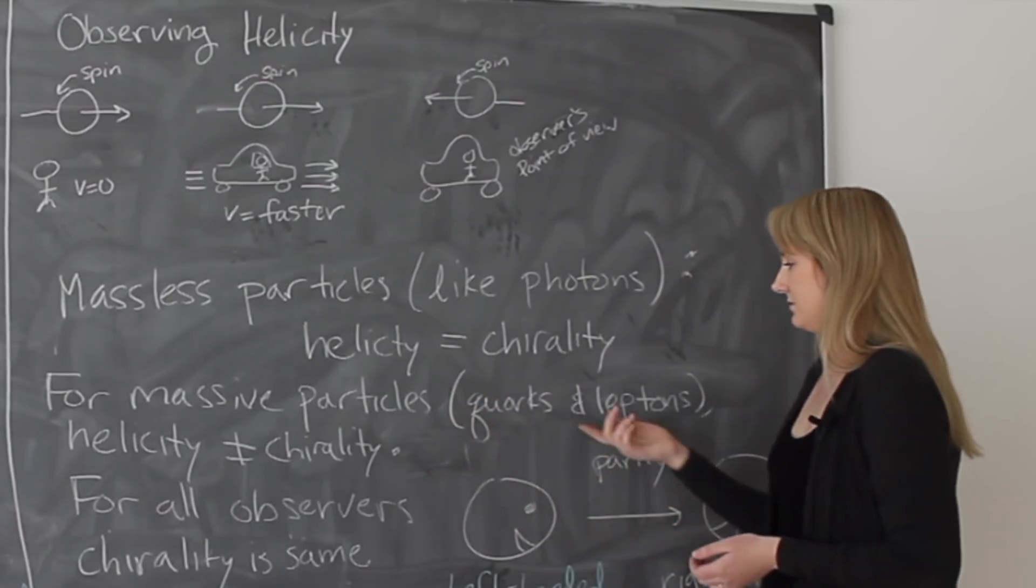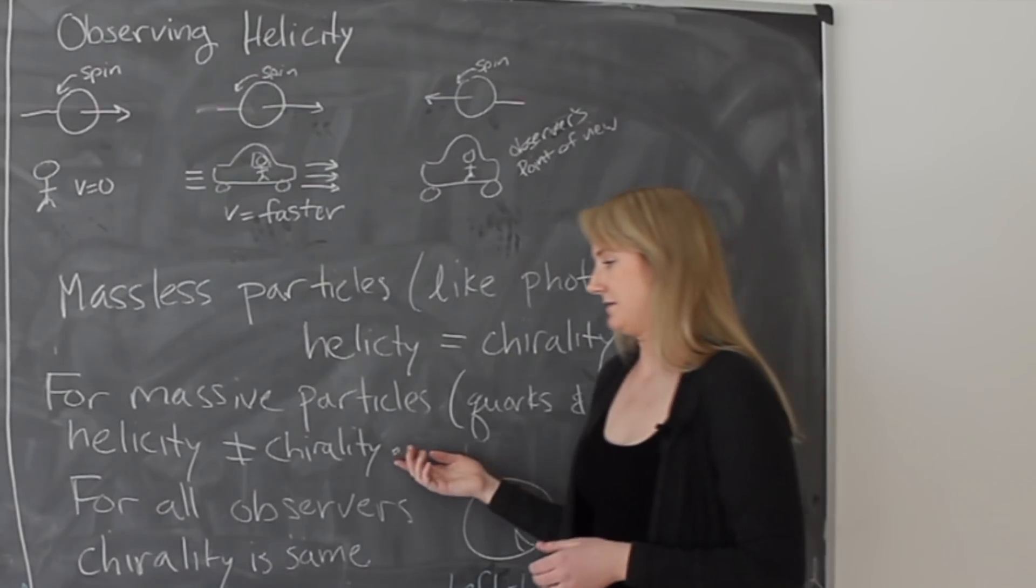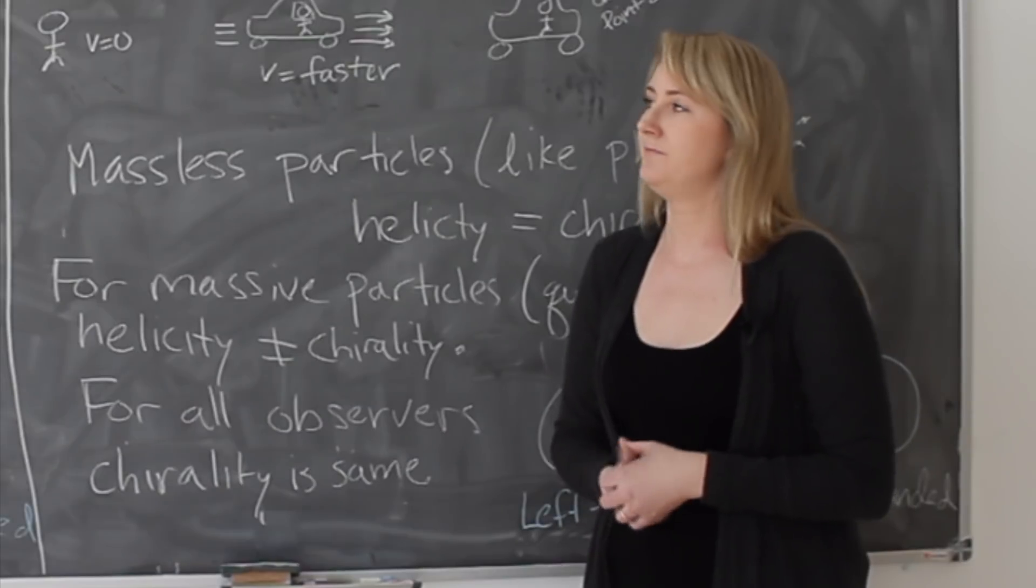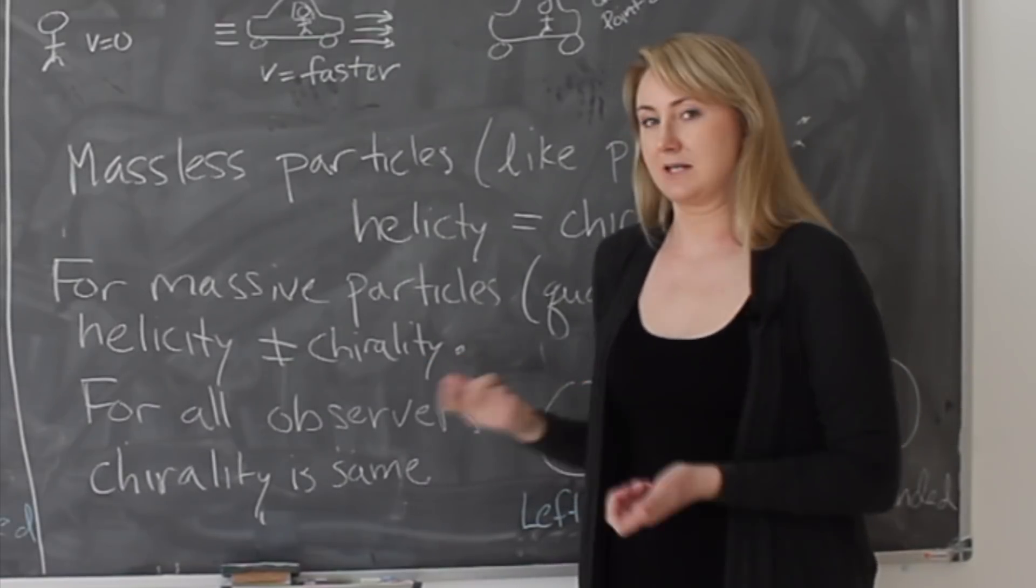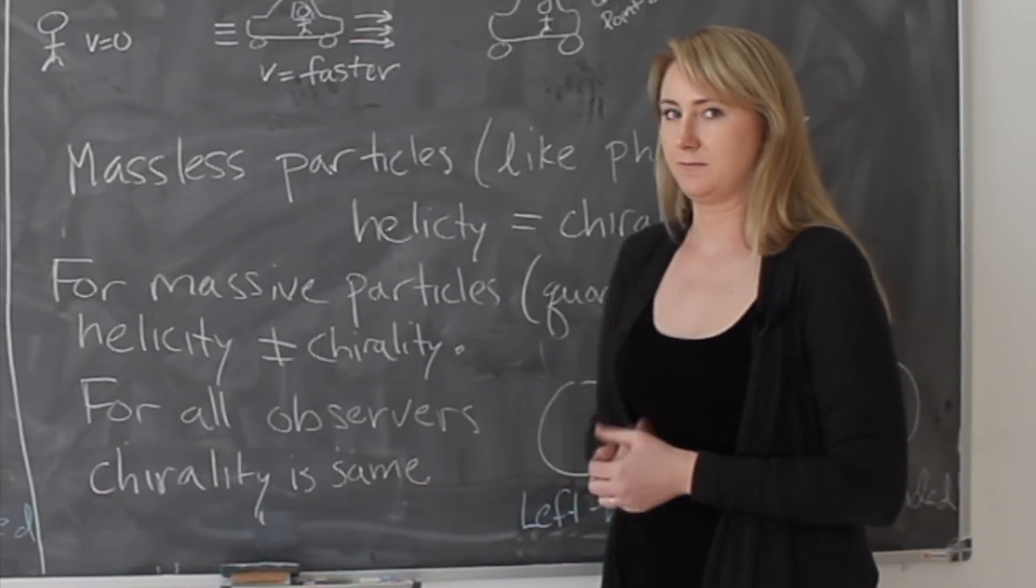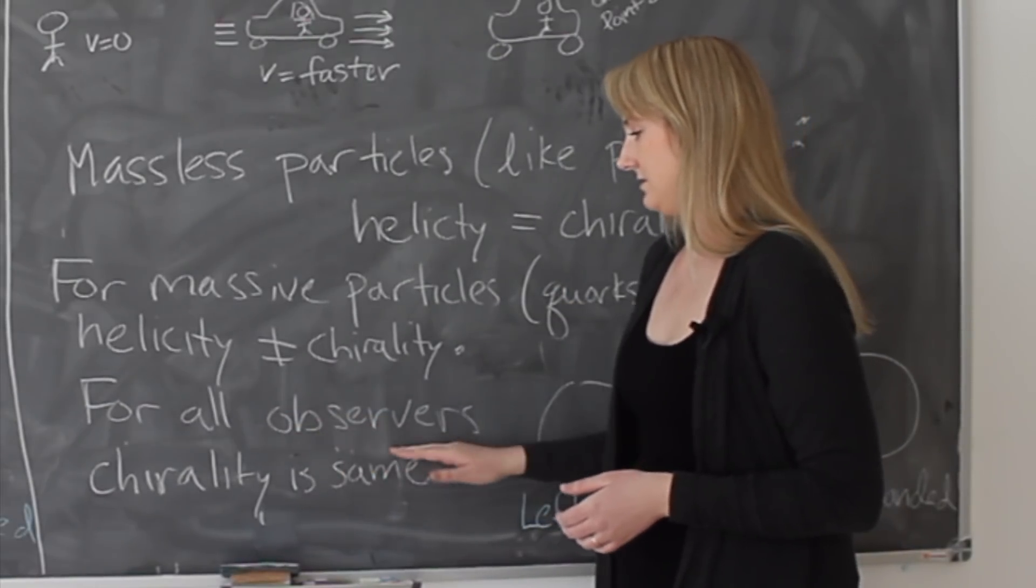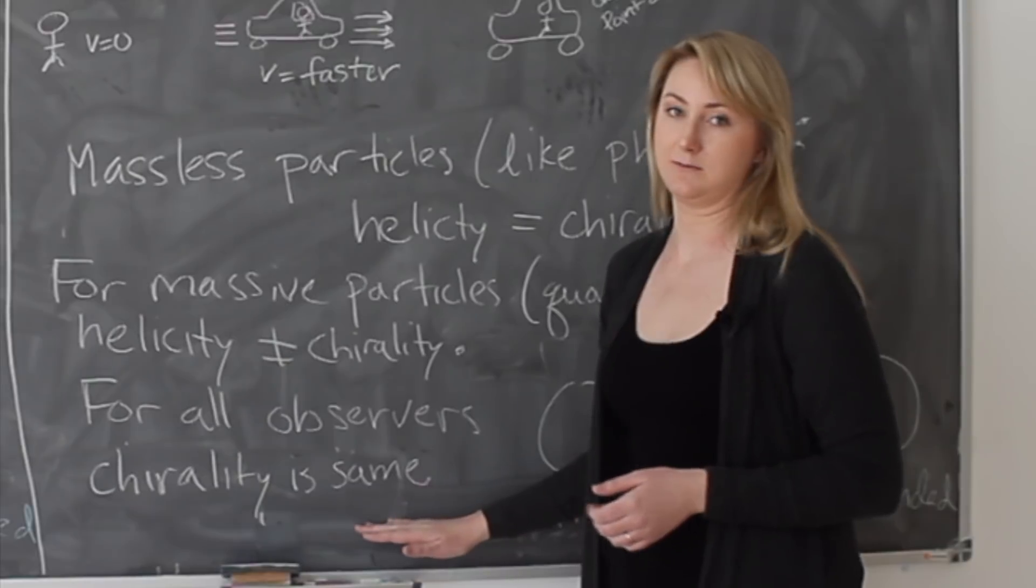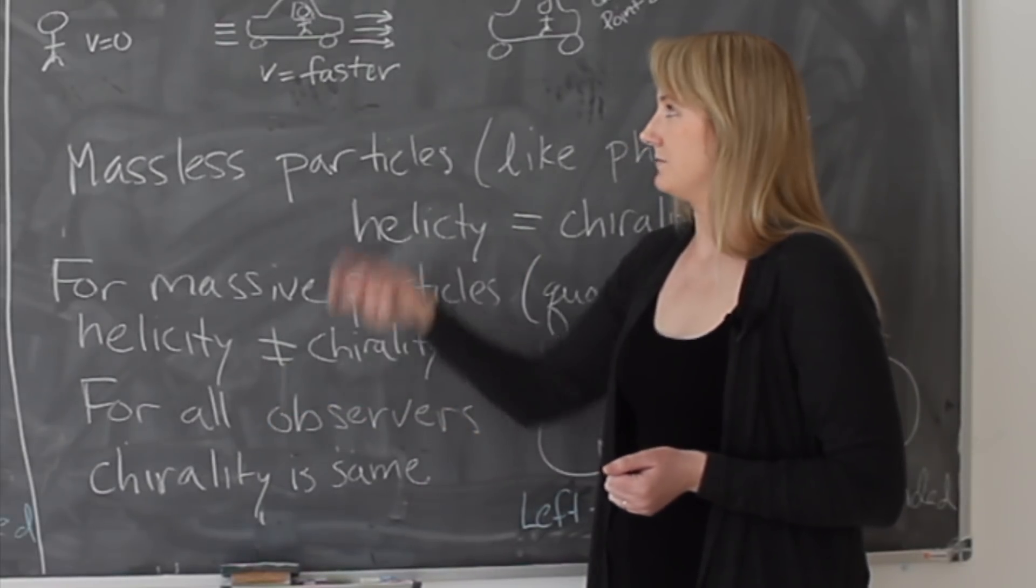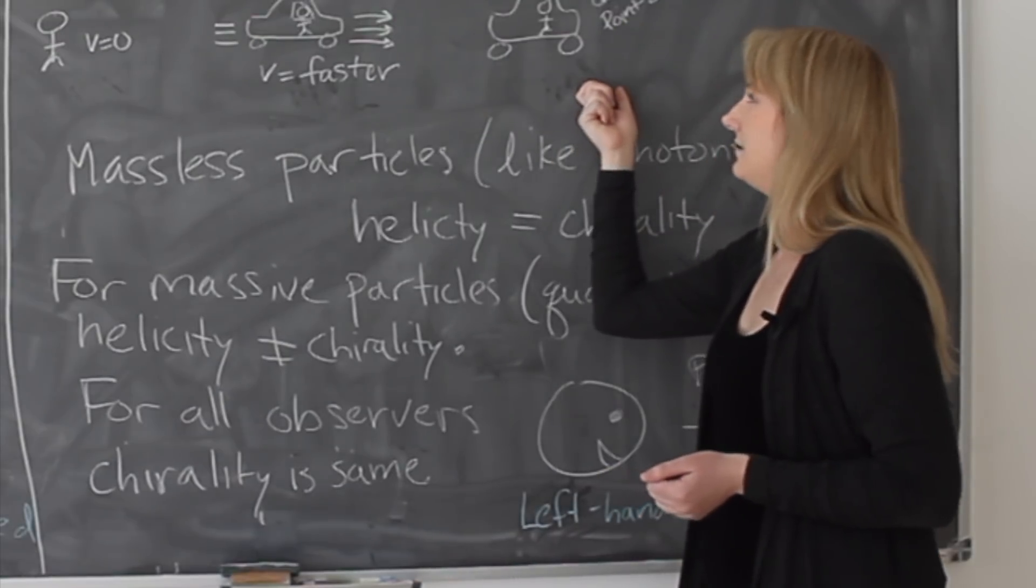For massive particles, like quarks and leptons, helicity is not the same as chirality. Chirality is a more abstract idea, so I can't get into the precise definition. But the idea is that chirality is a property of the particle that's always the same no matter how fast the observer is going. If a left-handed particle is observed in one frame, it's still left-handed in this frame.